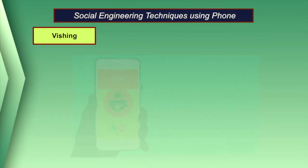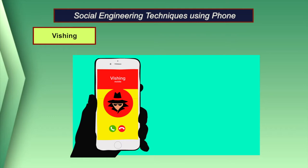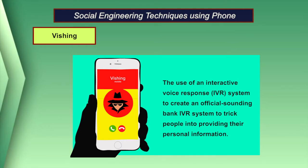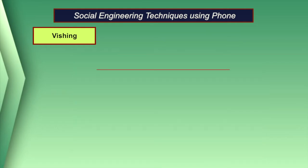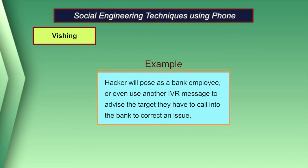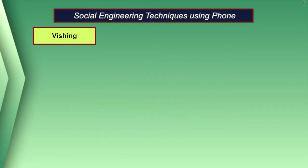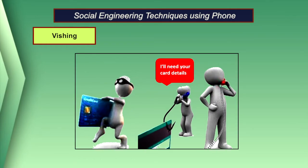The second technique is using IVR or phone phishing, also known as vishing. This involves using an interactive voice response system to create an official-sounding bank IVR system to trick people into providing their personal information. For example, a hacker poses as a bank employee or uses an IVR message to advise the target to call a number — which is not the bank's real number — and records their account information as it is entered. A hacker could similarly use this method to attack a company employee and have them enter their password via telephone.